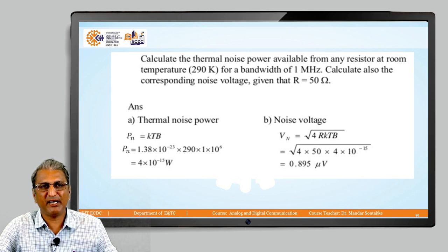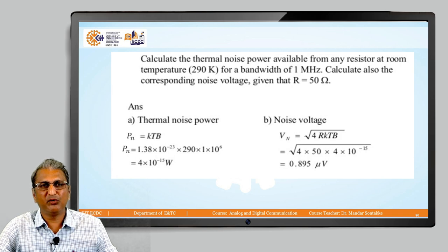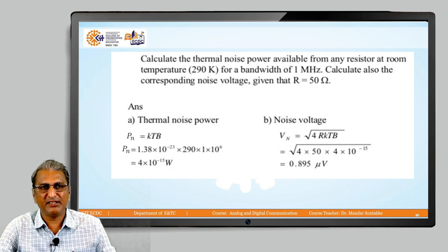Thermal noise power is given by P_n = kTb, and noise voltage by V_n = √(4RkTb). k is the Boltzmann constant: 1.38 × 10⁻²³. T is 290 Kelvin and bandwidth is 1 megahertz, which converts to 1 × 10⁶ hertz. So noise power P_n = 1.38 × 10⁻²³ × 290 × 1 × 10⁶ = 4 × 10⁻¹⁵ watts. Noise power is measured in watts.